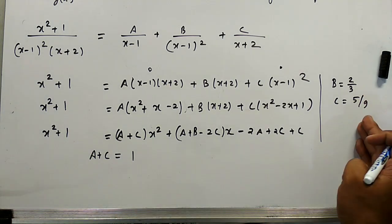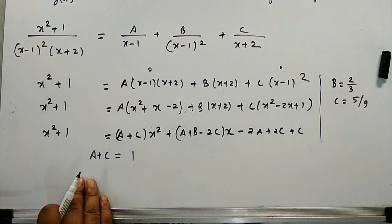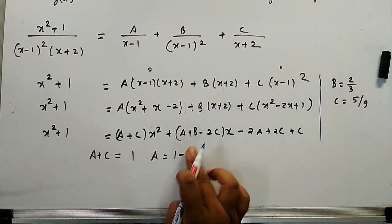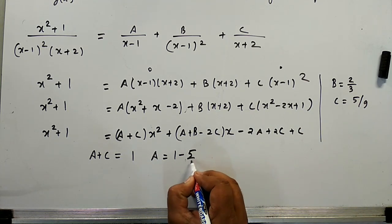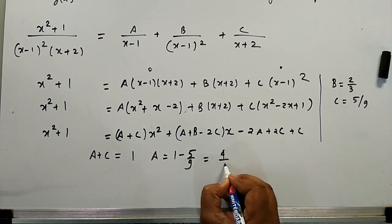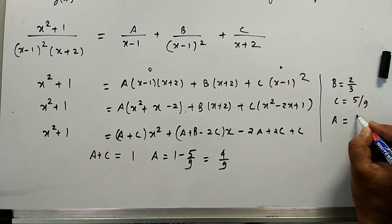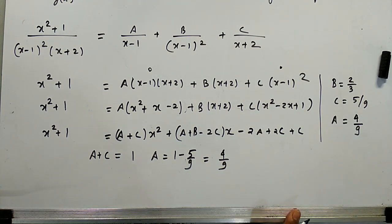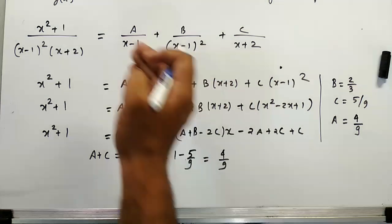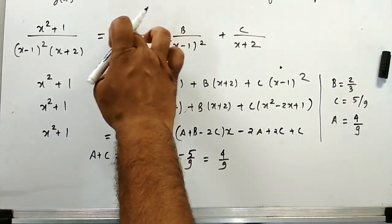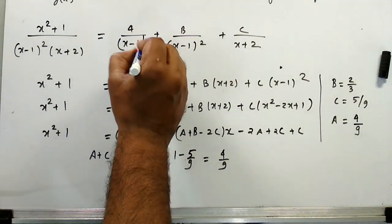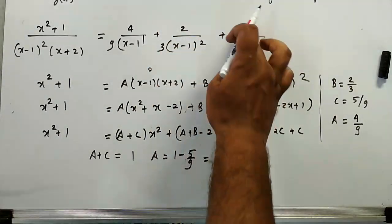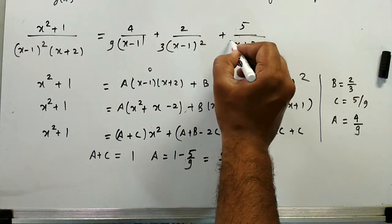We have already calculated C = 5/9, so from A + C = 1, we get A = 1 - C = 1 - 5/9 = 4/9. So A = 4/9. Putting A = 4/9, B = 2/3, and C = 5/9 into the partial fraction form gives the final answer.